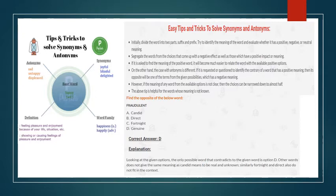If meaning of any word from the available options is not clear, then the choices can be narrowed down to almost half. The above tip is helpful for words whose meaning is not known to you. Now let's see one example. Find the opposite of the word fraudulent. Options are candied, direct, fortnight, genuine. The correct answer will be genuine. Looking at the given options, the only possible word that contributes to the given word is option D. Other words do not give the same meaning and do not fit in the context.